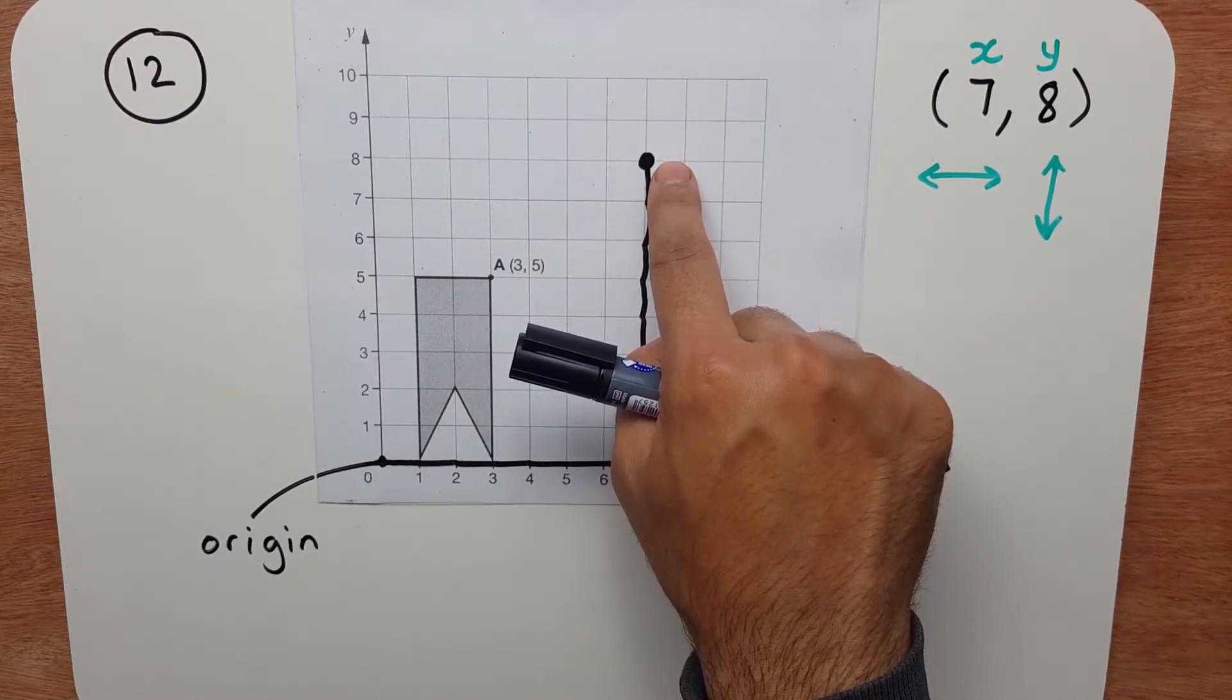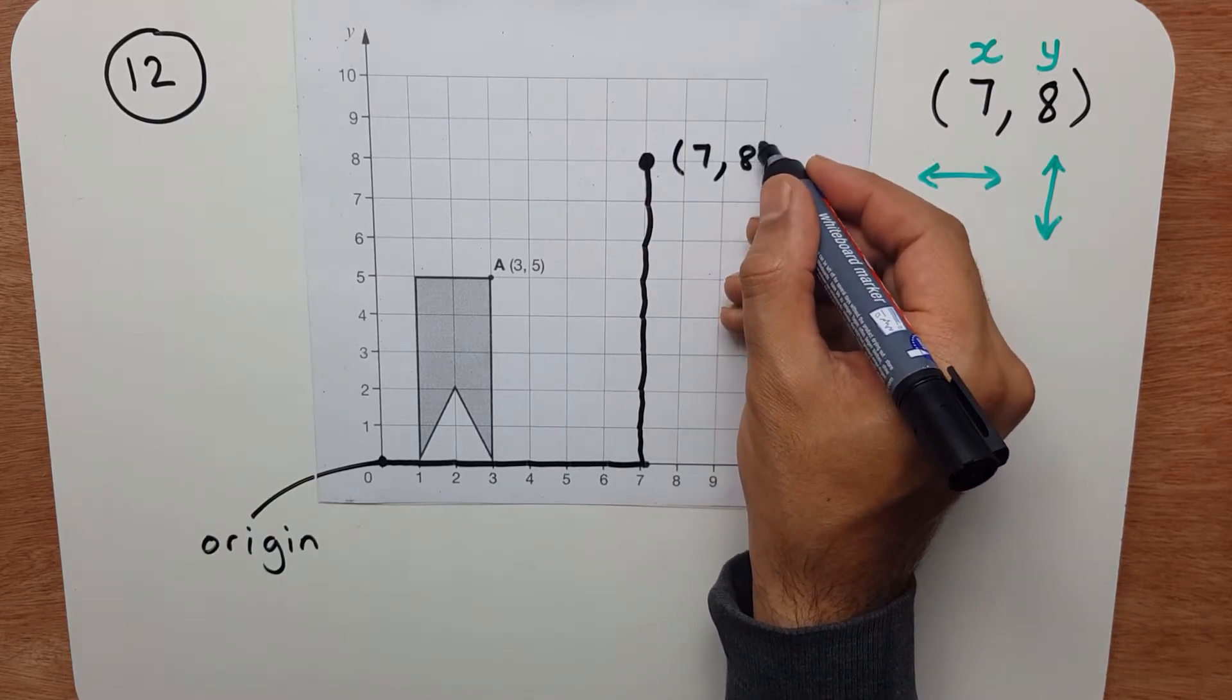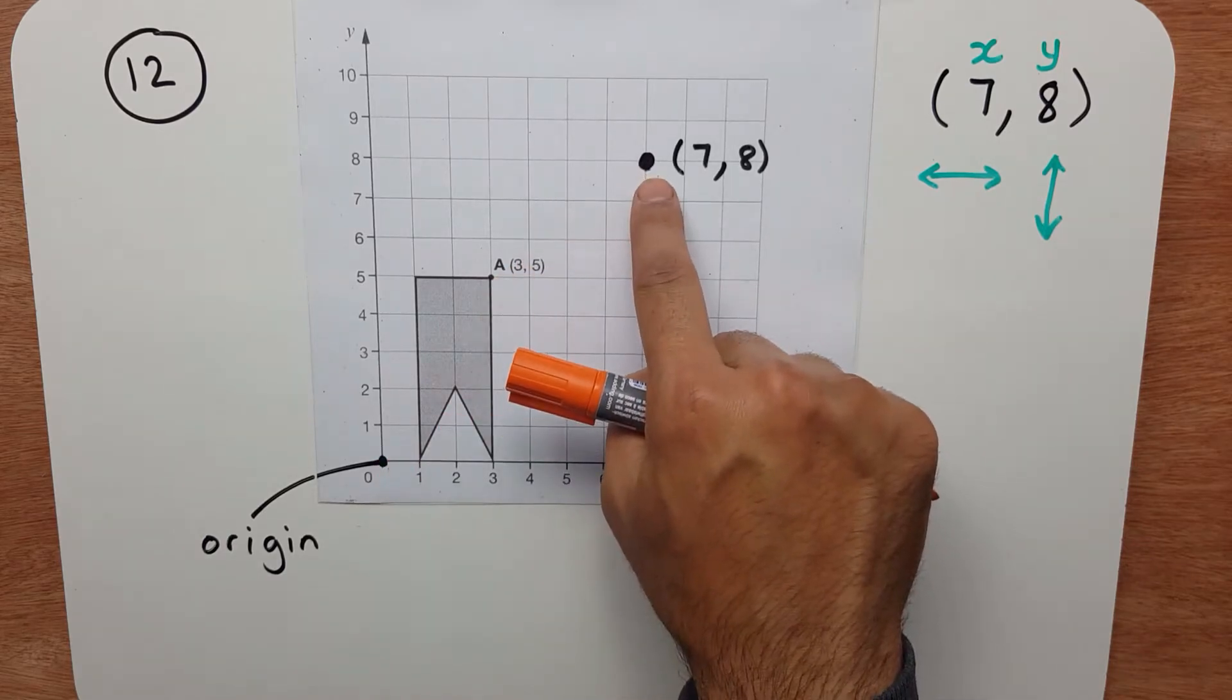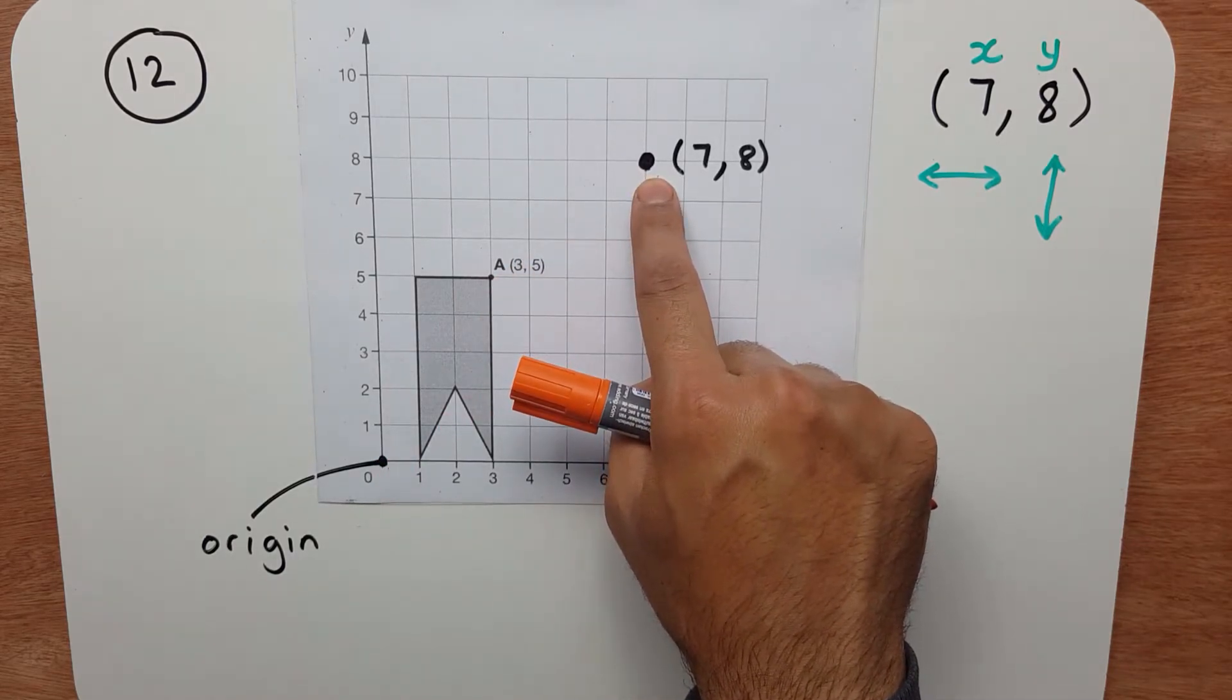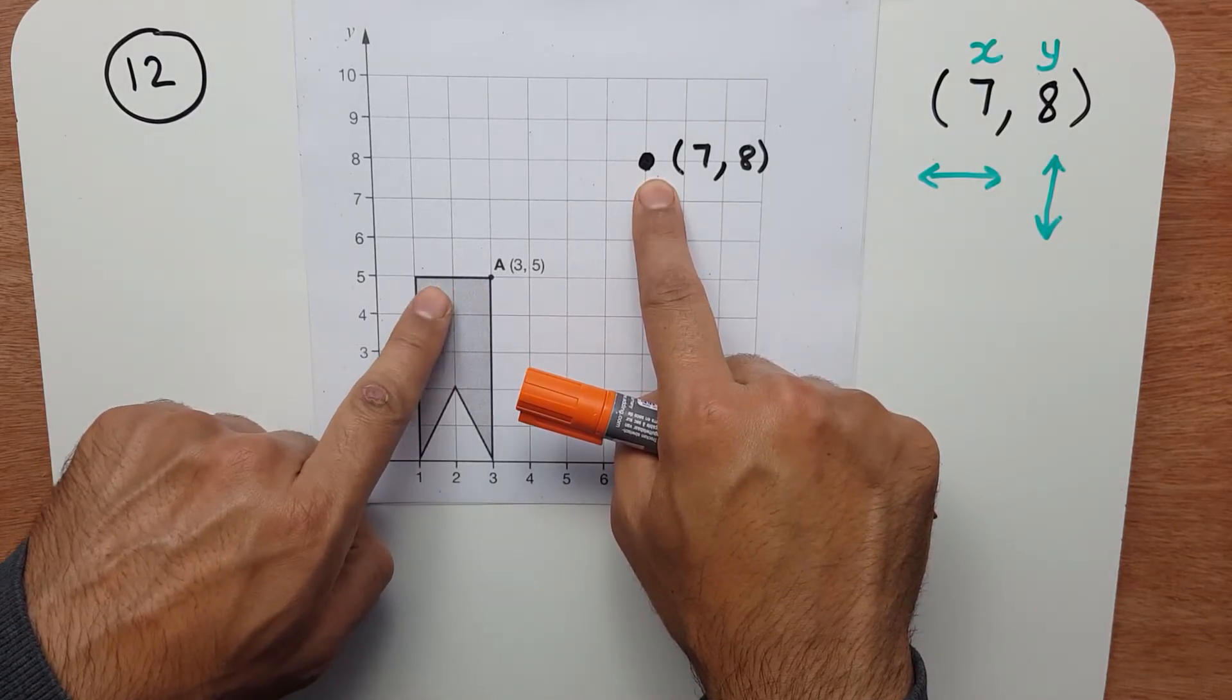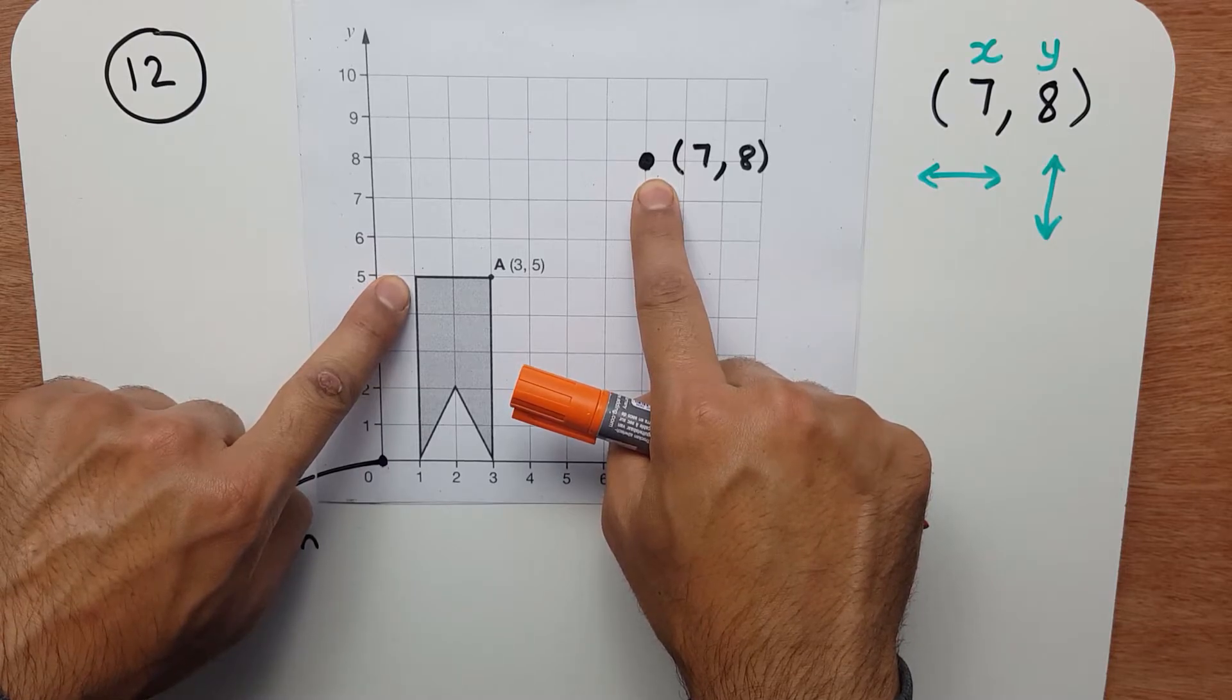And the coordinates for that point are 7, 8. Now if you look at this, point A has moved there. So where would the rest of the shape be? So look, if I go 1, 2, I can find this corner or this vertex.